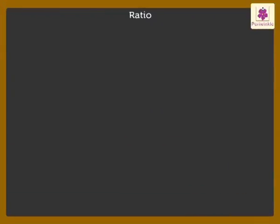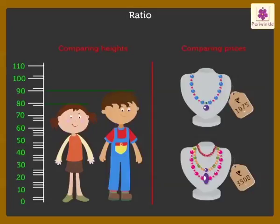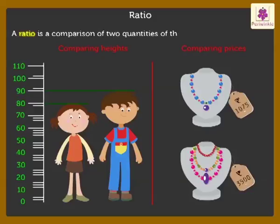What do we mean by a RATIO? In our daily life, many a times we compare two quantities of the same type. In certain situations, comparison by division makes better sense than comparison by finding out the difference. Thus, a RATIO is comparison of two quantities of the same kind by division.